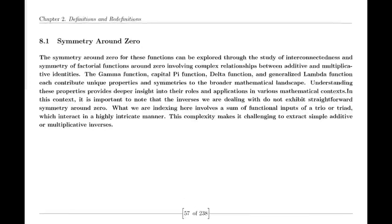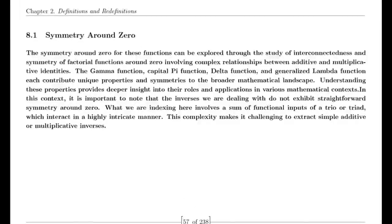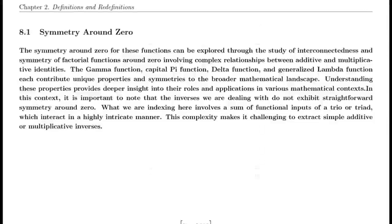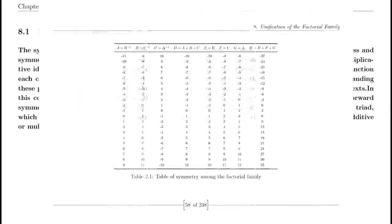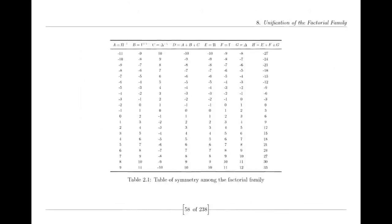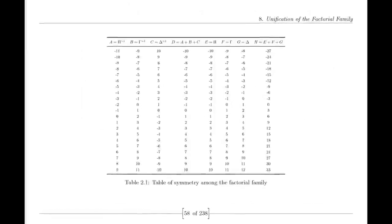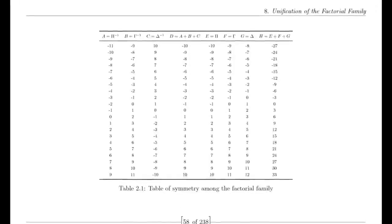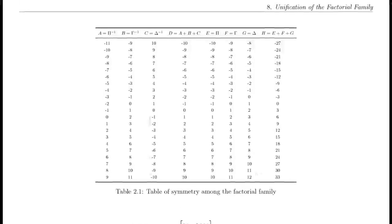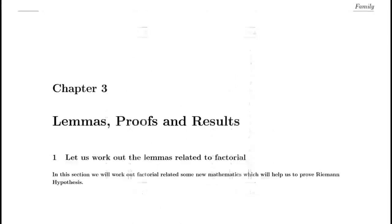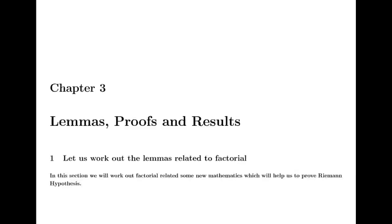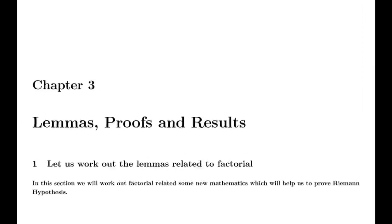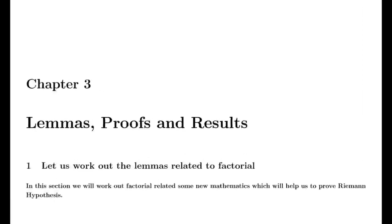The Riemann hypothesis itself deals with the precise and delicate placement of zeros of the Zeta function along the critical line. The phenomenon we've explored with e and ln 2 is a small but tantalizing glimpse into the kind of intricate, beautiful truths that the Riemann hypothesis seeks to uncover.